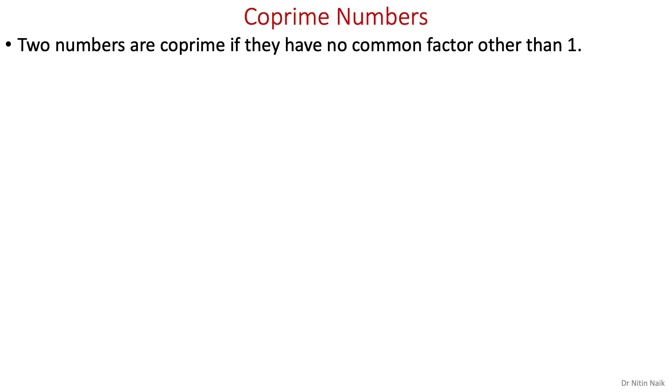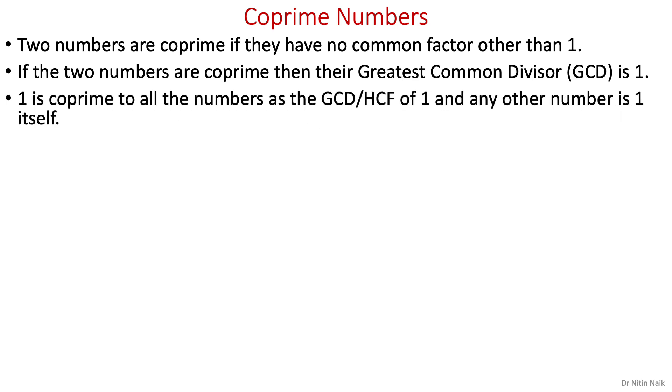Another important term is co-prime, which we'll use throughout the learning of modular arithmetic and cryptography. So what is co-prime? Co-prime numbers are relatively prime numbers that have no common factors other than 1. That means their GCD is 1, and 1 is co-prime to all numbers as the GCD of 1 and any other number is 1 itself.